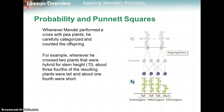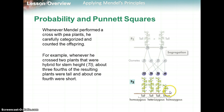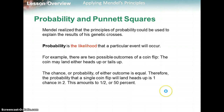Whenever Mendel performed a cross with pea plants, he carefully categorized and counted the offspring. For example, whenever he crossed two plants that were hybrid stem — big T, little t — about three-fourths of the results were tall and about one-fourth were short. So there's three tall and one short. Mendel realized that the principle of probability could be used to explain these results.